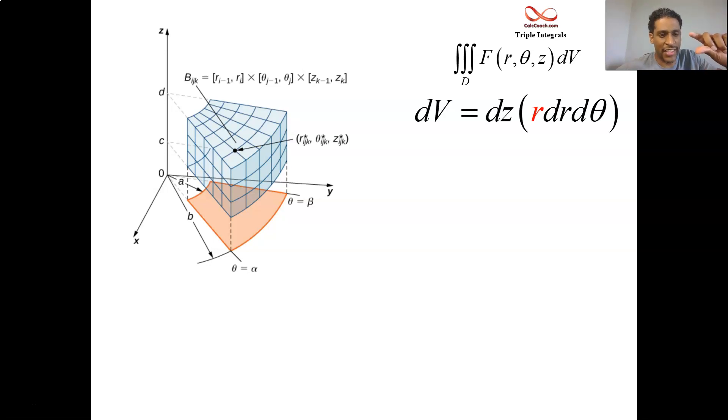The length of one piece will be just dz, that's the height. The height of it is dz. And then there's dr, and then there's d theta. But the piece that's the bent piece along the arc of the circle, that's measured by r times d theta.